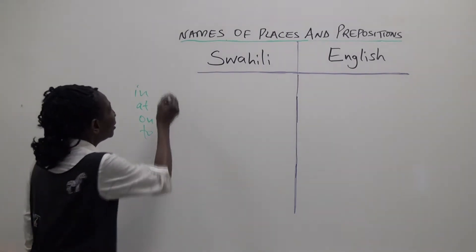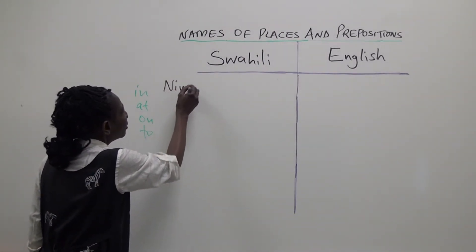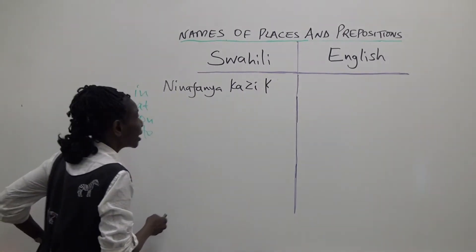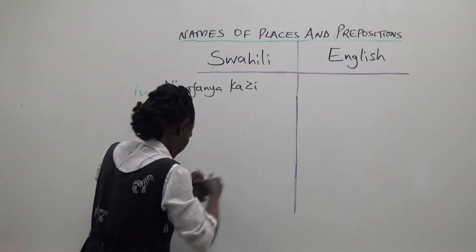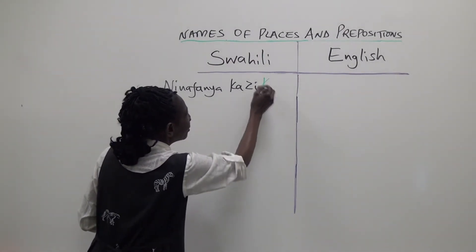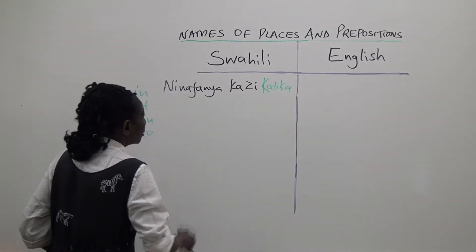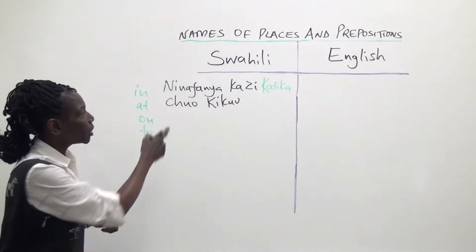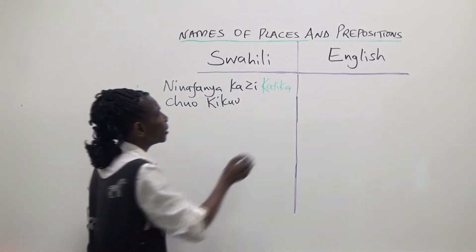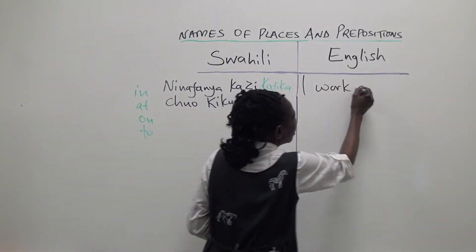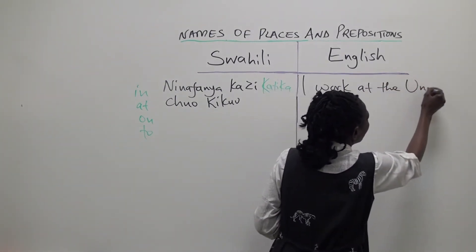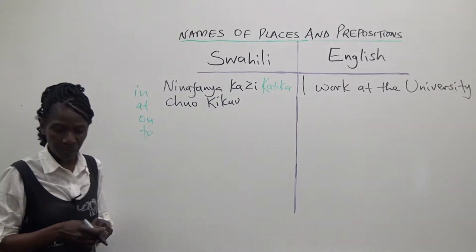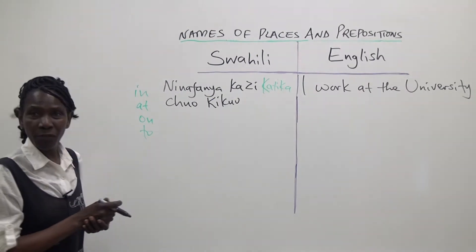Our first sentence would be: ninafanya kazi katika chuo kikuu. The translation of this sentence in English would be: I work at the university, or I work in the university.